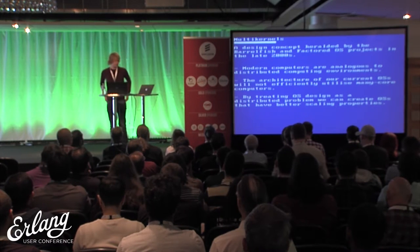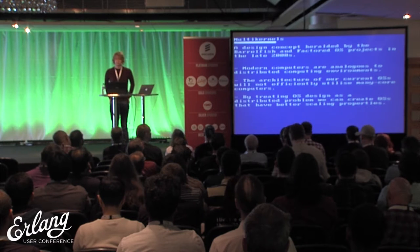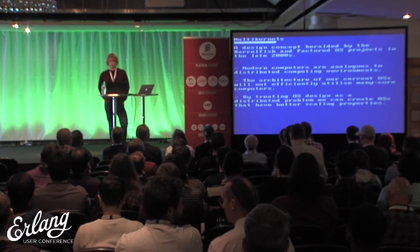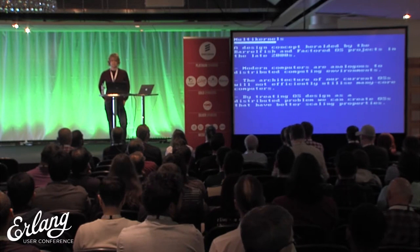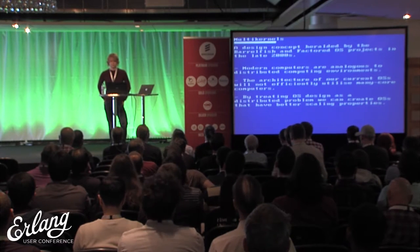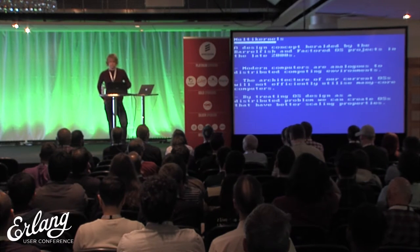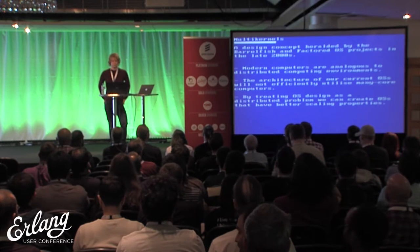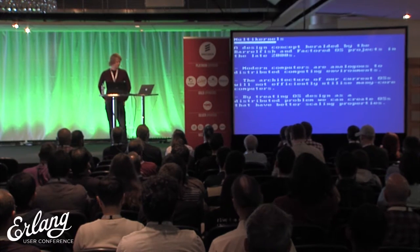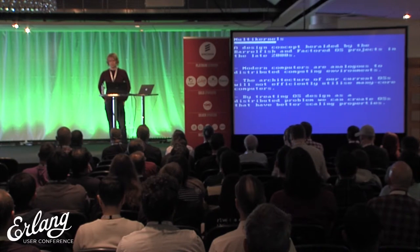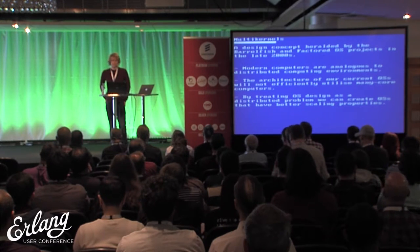Multi-kernels is an idea created by the Barrelfish and Factored OS teams, who were building research operating systems trying to run on systems with tens, hundreds, or even thousands of cores. They were motivated by trying to get rid of locks — that's the main principle. This came at a time when people were expecting thousands of cores within computers within about ten years, back in 2007. That didn't really work out.